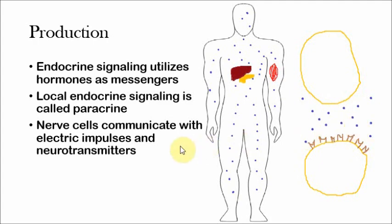There's a special type of signaling that's more prevalent in animals: signaling between nerve cells. Nerve cells communicate with both electric impulses and neurotransmitters. A neurotransmitter is just a special type of hormone that acts in nerve cells.